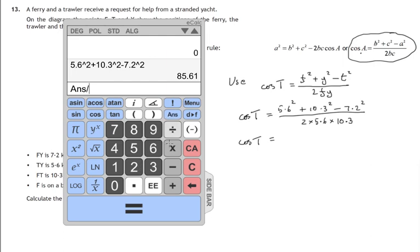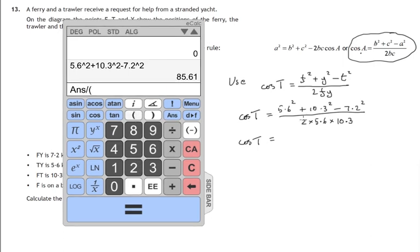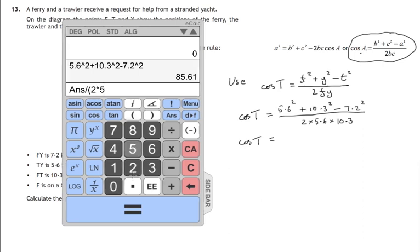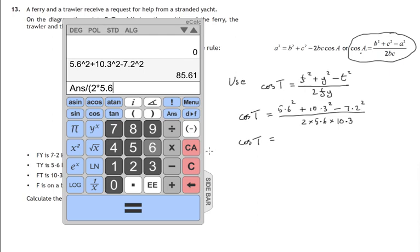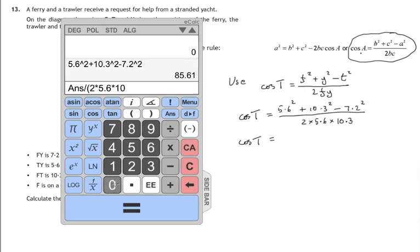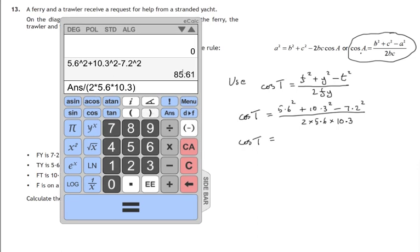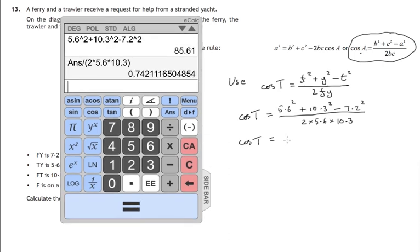We have to divide by the whole of 2 times 5.6 times 10.3. So that's that answer, 85.61, that's the top line, divided by, and I've put this in brackets so that we get the whole of the bottom line, 2 times 5.6 times 10.3. That all comes to 0.74211 and so on.